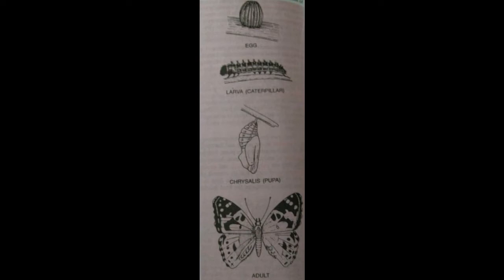Now we have come to the abdomen. Abdomen consists of 10 segments. The first segment is reduced and its sternum wanting or wholly membranous. The 7th and 8th are sometimes slightly modified in relation to the genitalia, and the 9th and 10th segments are greatly modified in the latter respect. This is all about the imago or the adult insect.